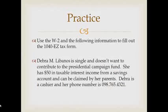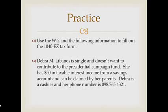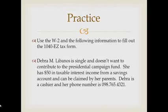As we fill out the tax form, we're going to use our W-2 and the following information. Deborah M. Labanios is single and doesn't want to contribute to the Presidential Campaign Fund. She has $50 in taxable interest income from a savings account and can be claimed by her parents. Deborah is a cashier and her phone number is 098-765-4321. Let's give it a whirl!